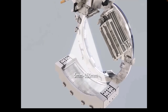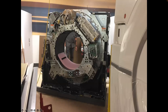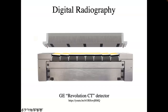A look inside the scanner during installation shows the x-ray tube, power supply, electronics, fans, and the detector array — all spinning at very high speed. It's recommended to search YouTube for 'spinning CT scanner' to see how fast these gantries rotate with the covers removed.